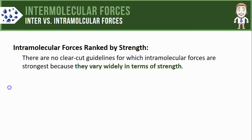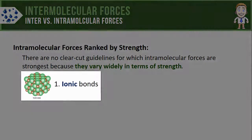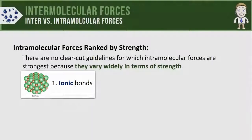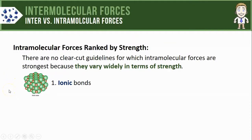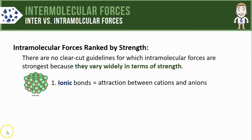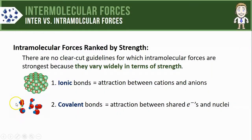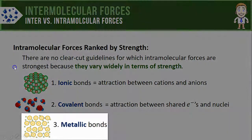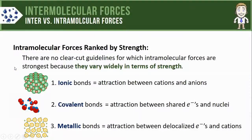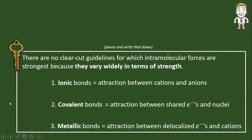Despite the fact that they can vary widely, you will often see ionic bonds listed as one of the stronger types of intramolecular forces or chemical bonds. Ionic bonds are the attractions between cations and anions. At number two we have covalent bonds — the attractions between shared electrons and two separate nuclei. And in last place, metallic bonds — the attraction between delocalized electrons and the metal cations in the sample. That list makes up some more of the key ideas for this video.